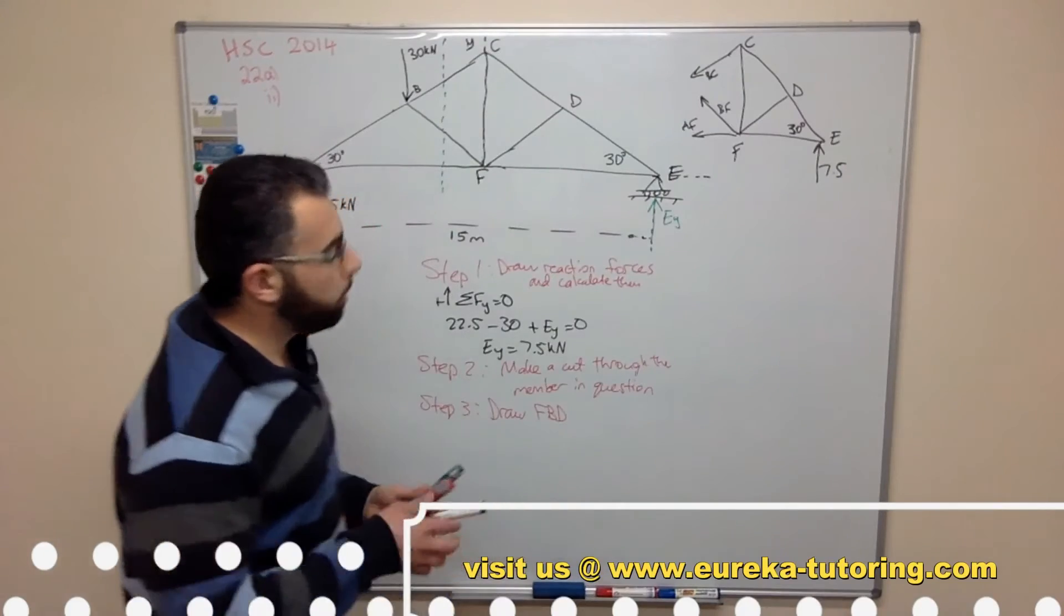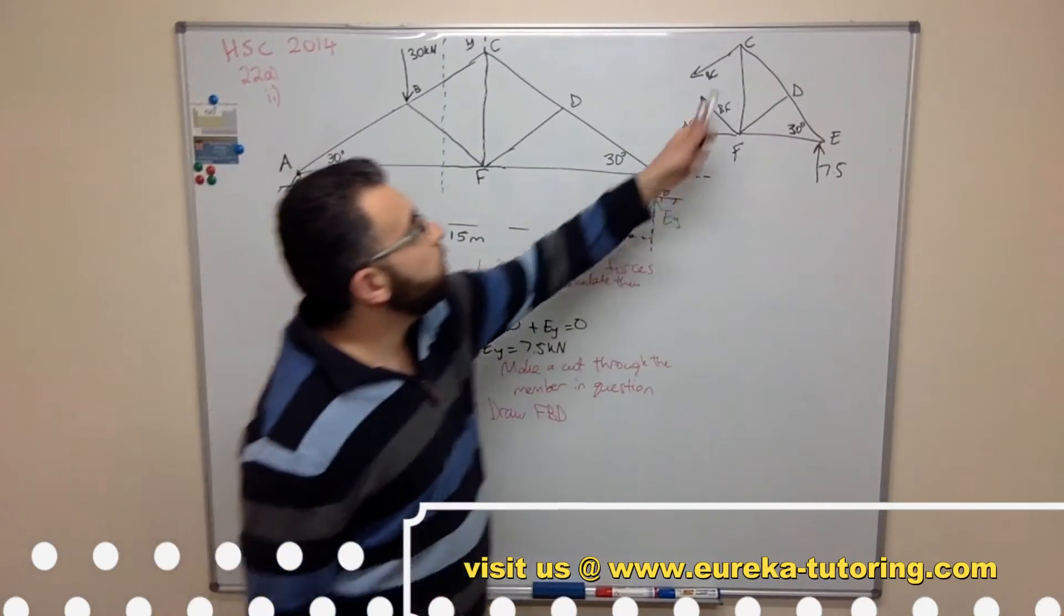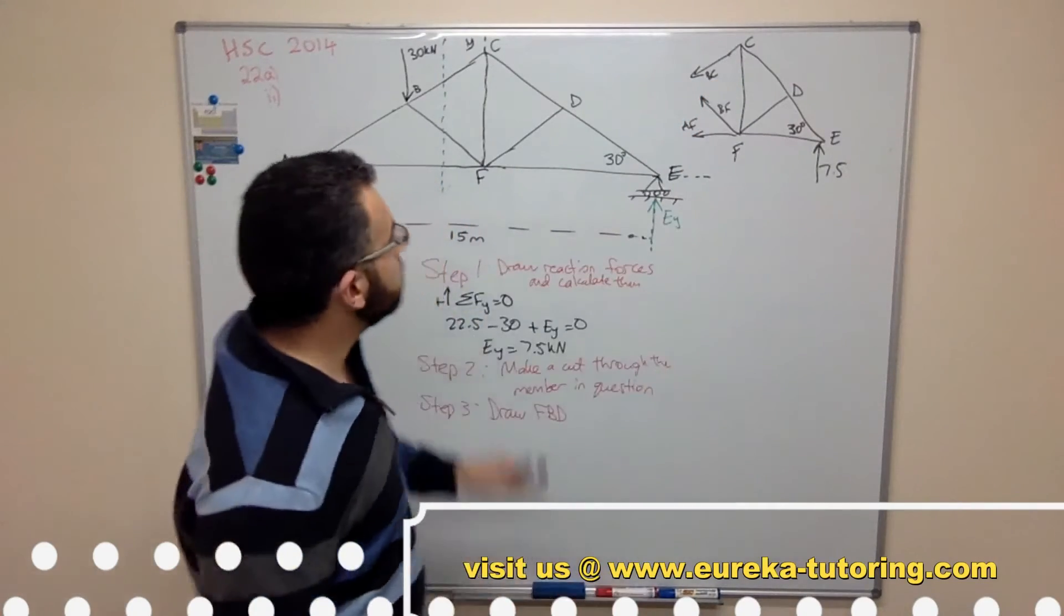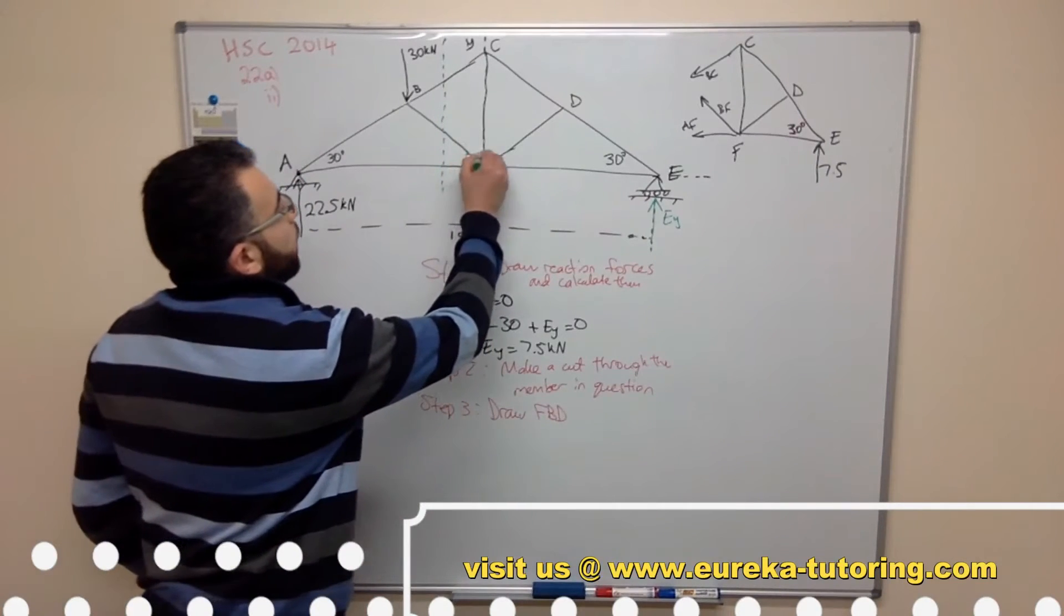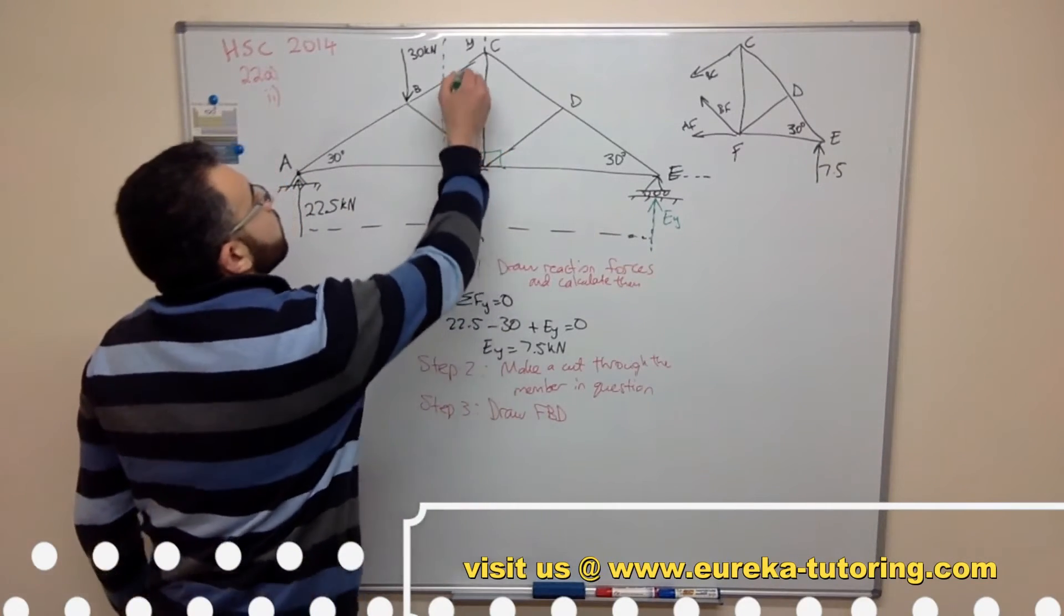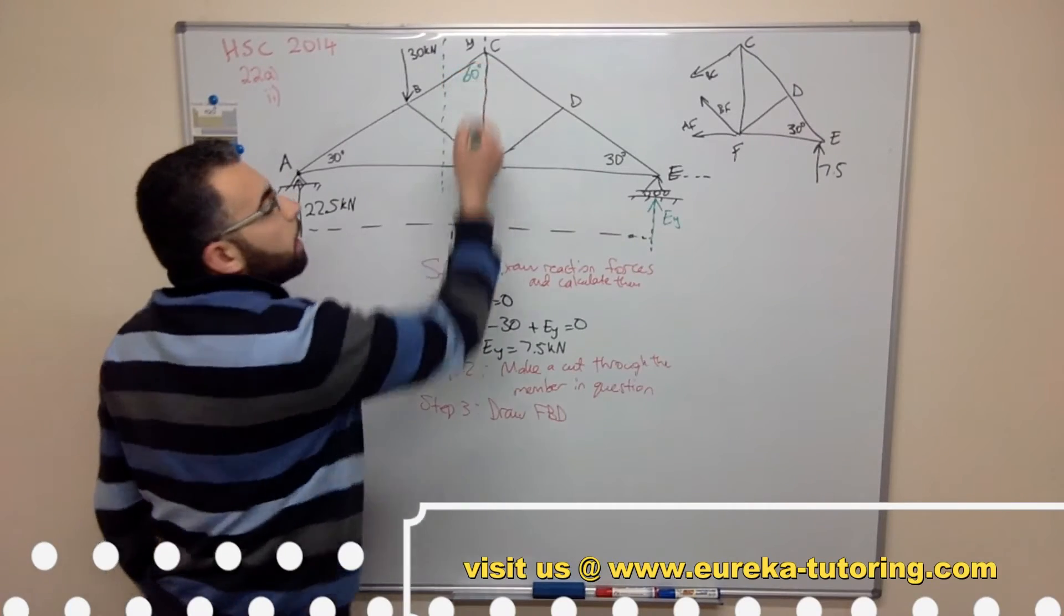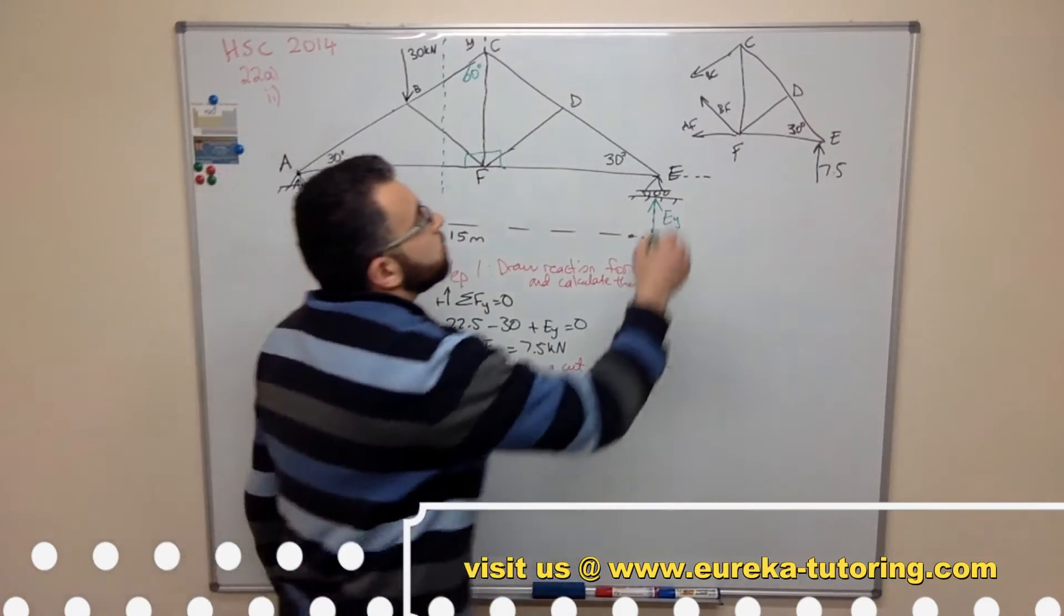But first before we break that up, we need to find this angle here. So by looking at the bigger picture, this here we know is a right angle, this is a right angle. So this here will be 60 degrees. Angle sum in a triangle, so this is 60.